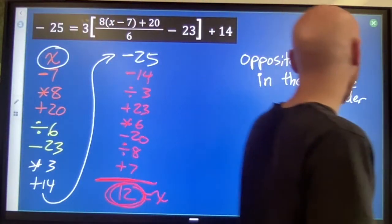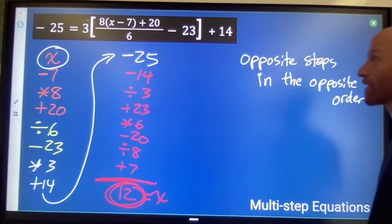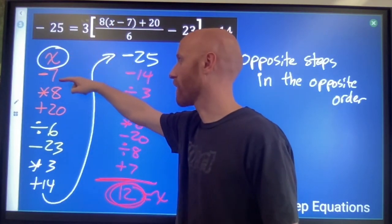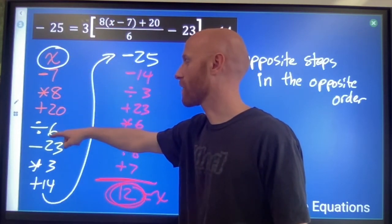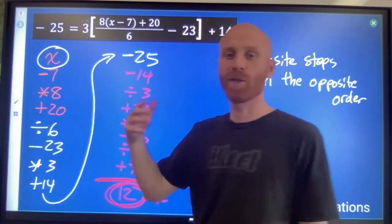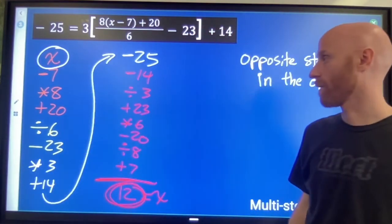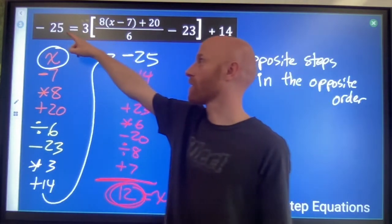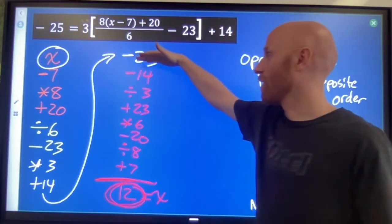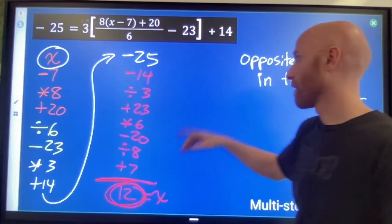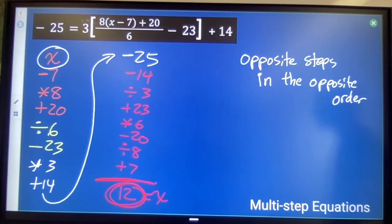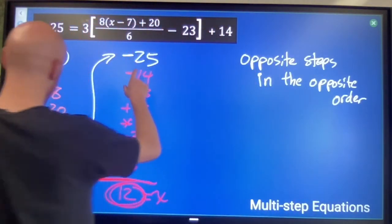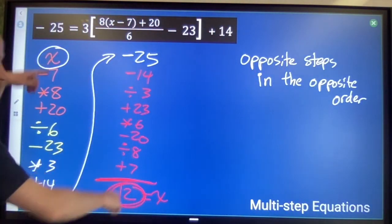Opposite steps, opposite order, key takeaways. Start at the variable, tell the story. What happens to the variable? What is the order of the things that happen to the variable? Then, starting at the finish, undo all of those steps using opposite operations, and make sure that you're undoing in the opposite order. Last becomes first, first becomes last.